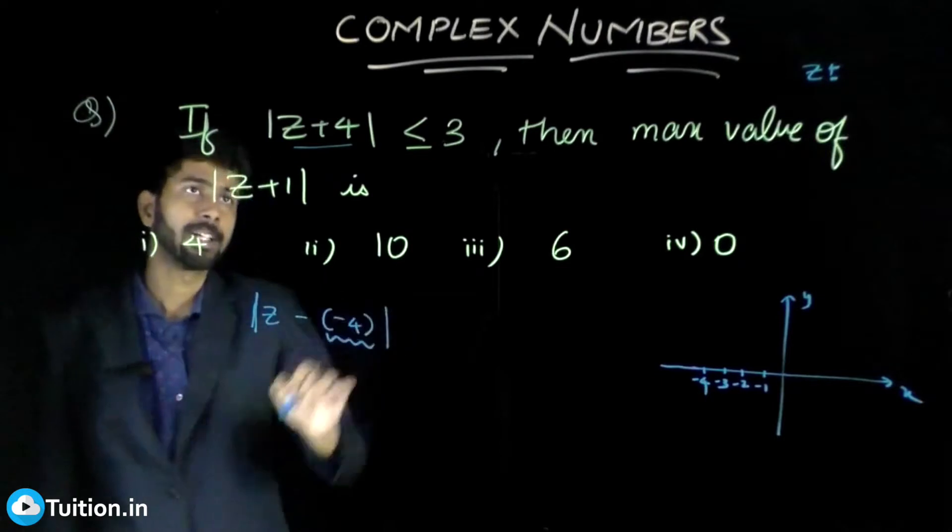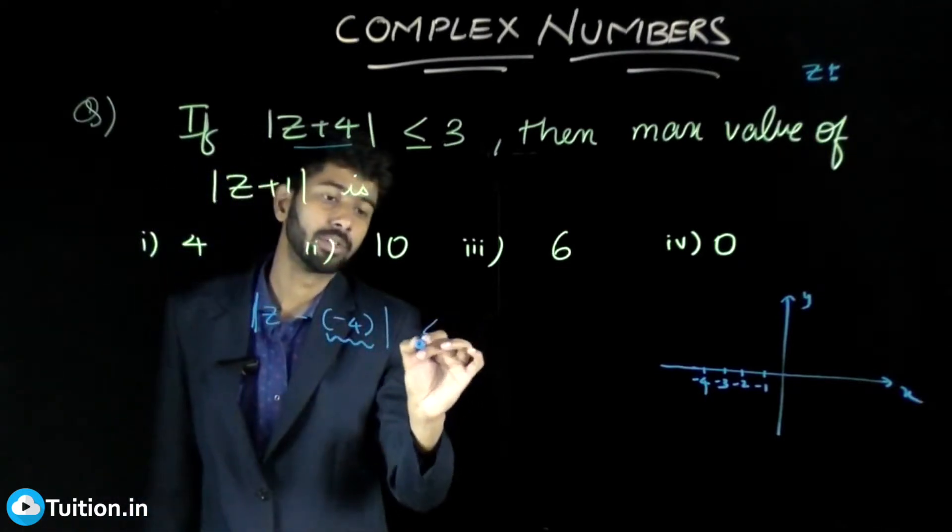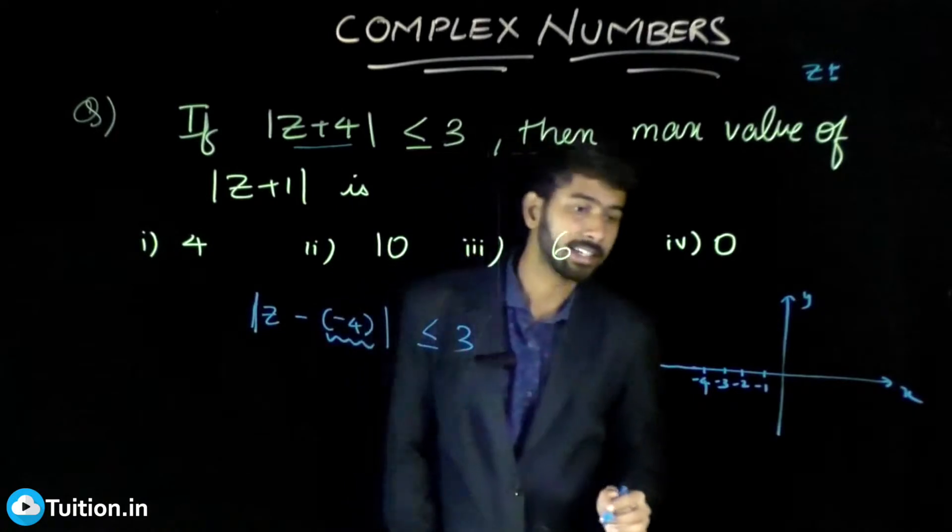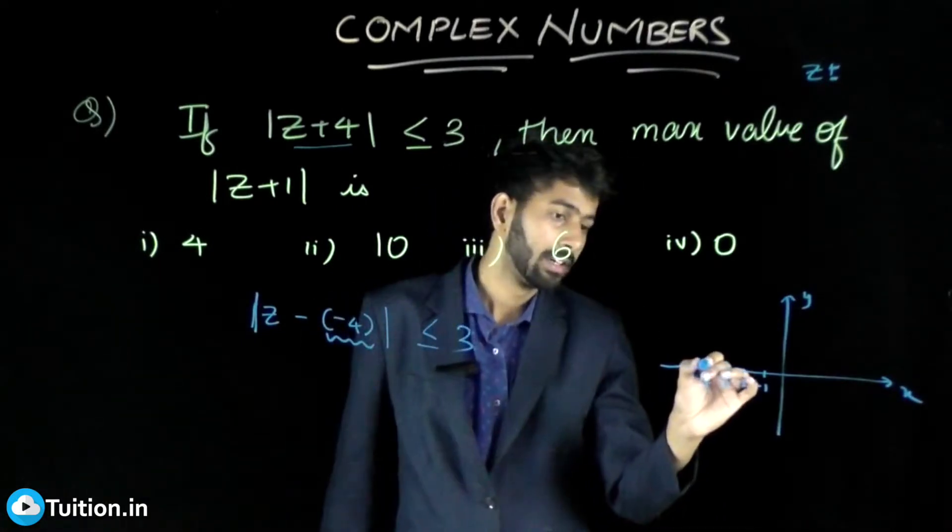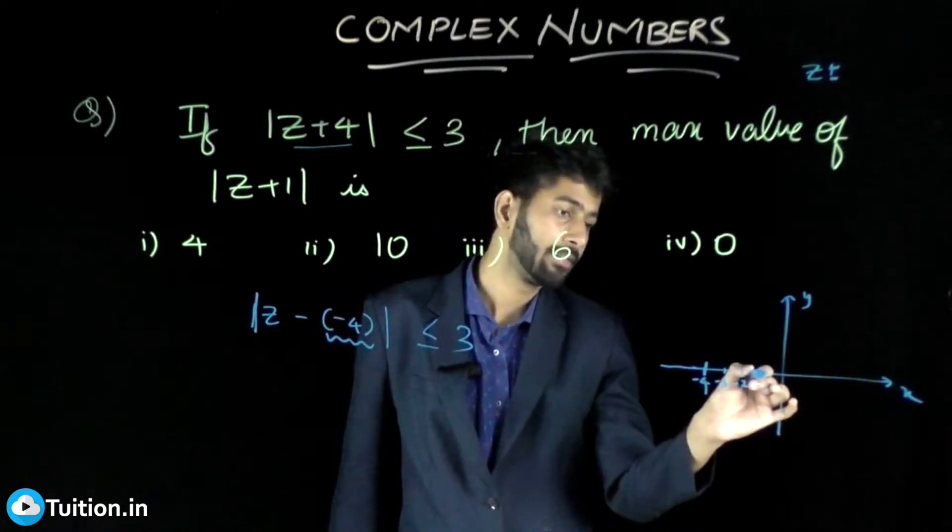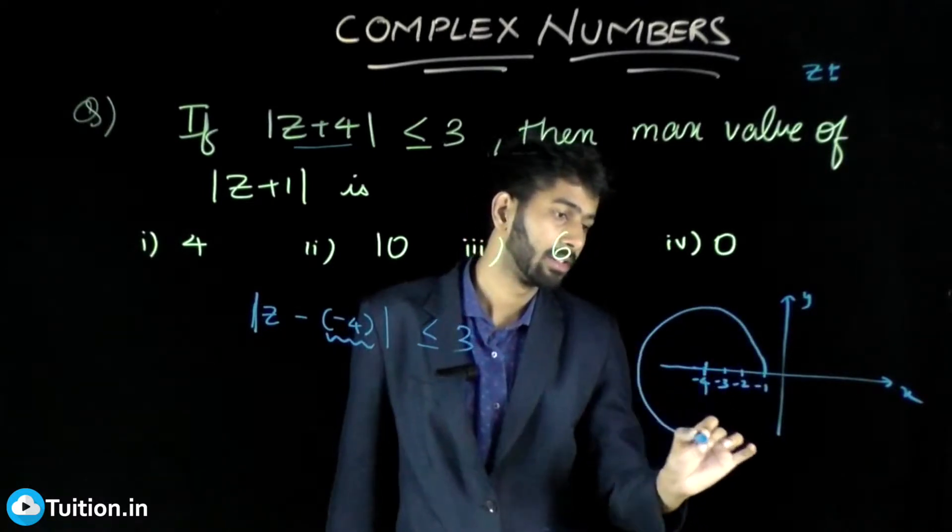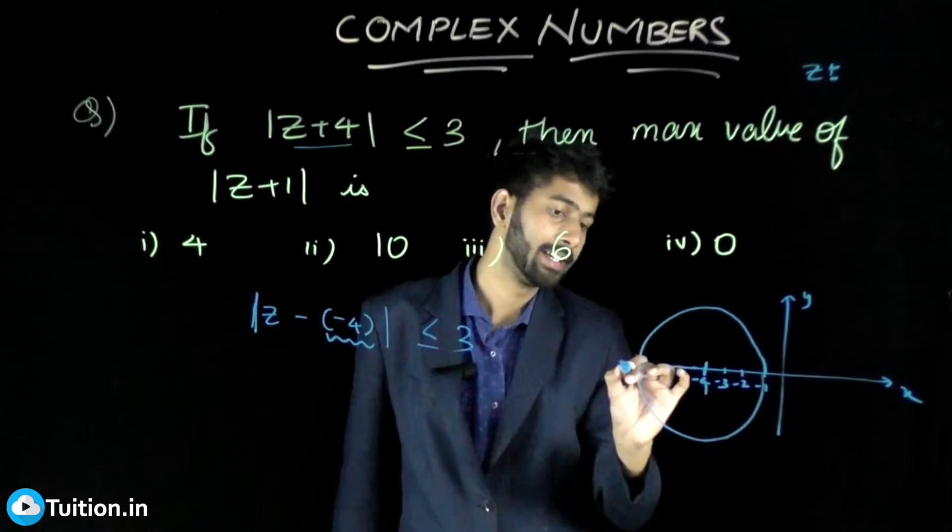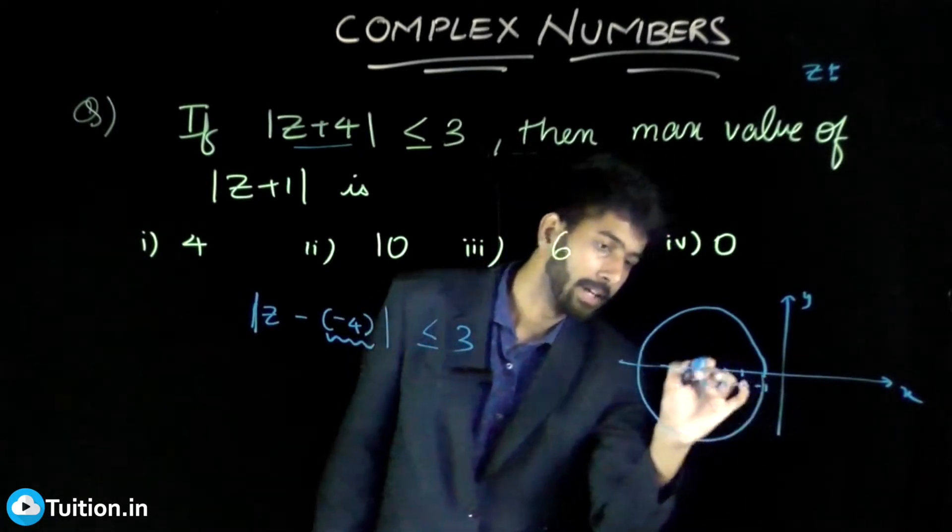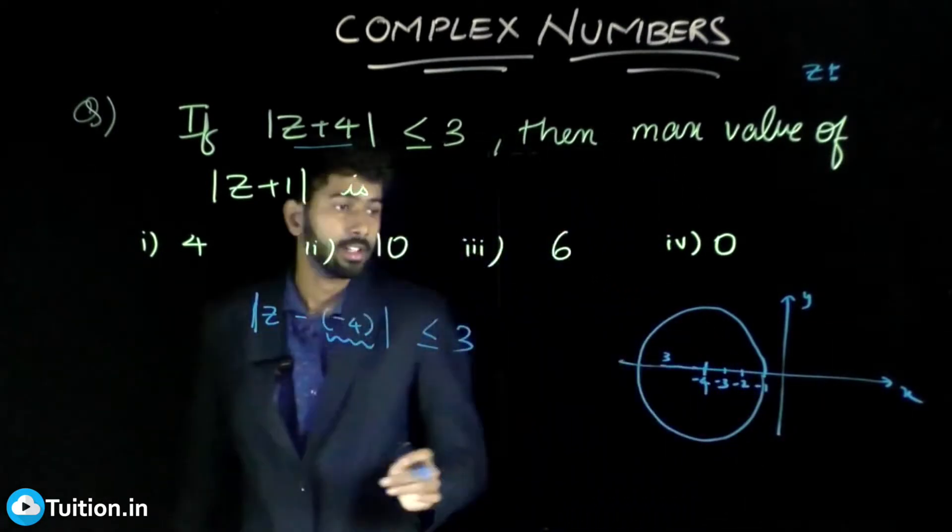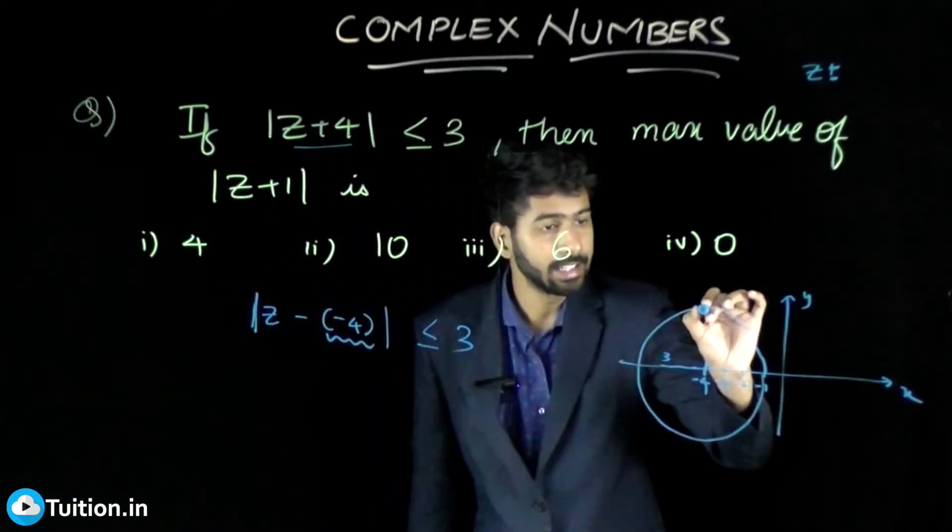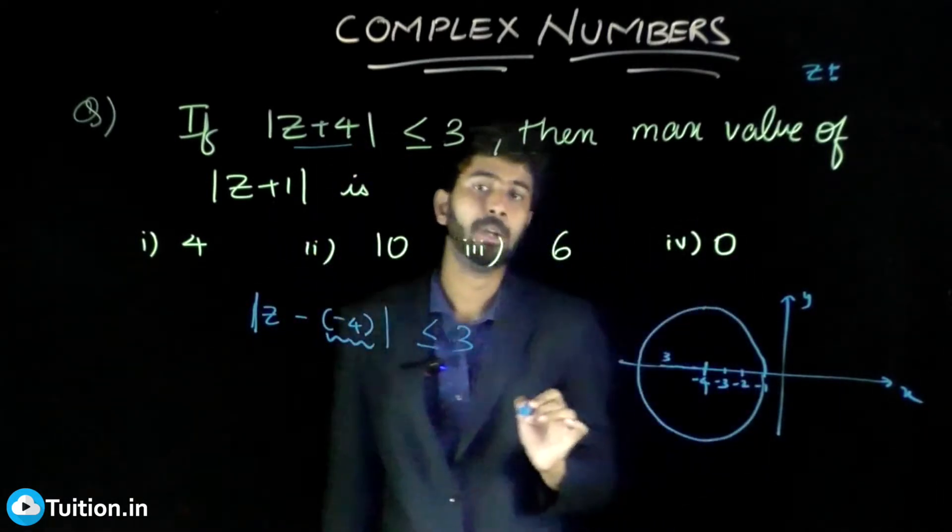z minus (-4) should be less than or equal to 3. This actually means a circle. So your z can be anything on this circle or inside this circle.